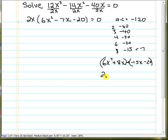Factor out a 2x here, and we're left with 3x plus 4. And out here we can factor out a negative 5,